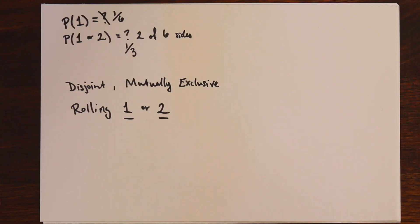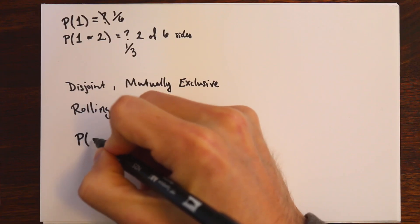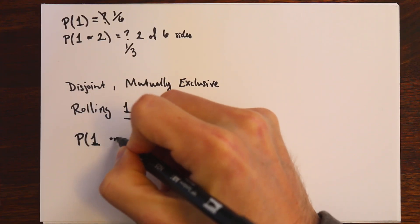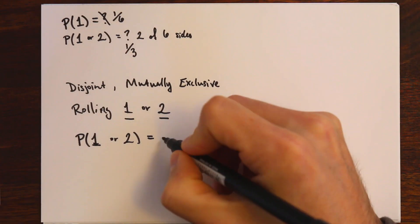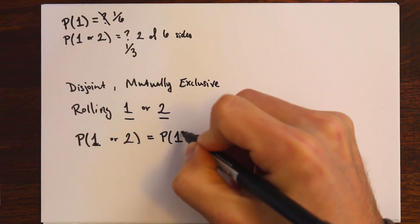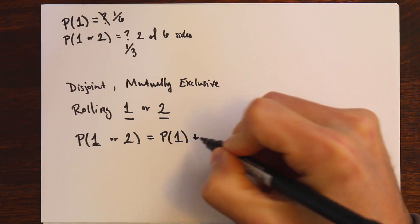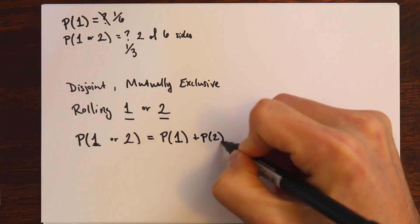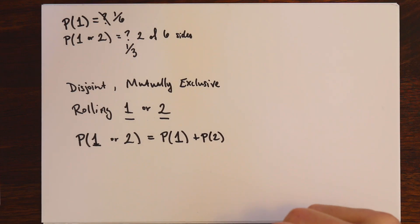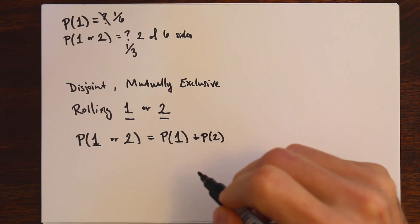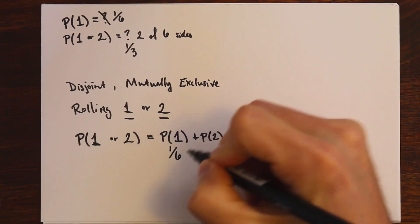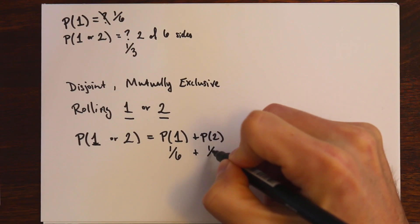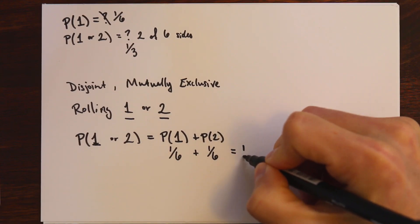There's also a rule associated with disjoint and mutually exclusive events. If we were to say what is the probability of rolling a 1 or a 2, since these are disjoint events, we can say that the probability of rolling a 1 or a 2 is equal to the probability of rolling a 1 plus the probability of rolling a 2. Since each side is equally likely, we have 1 sixth for 1 and 1 sixth for 2, and we get the same answer we had reasoned earlier.